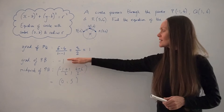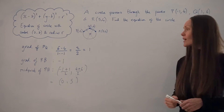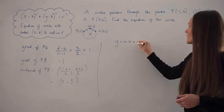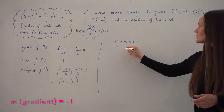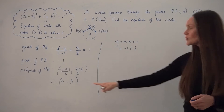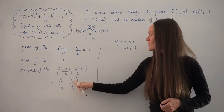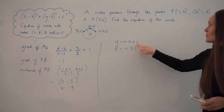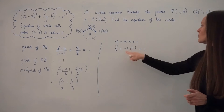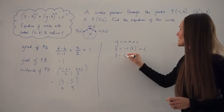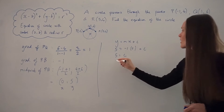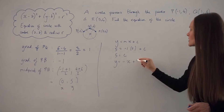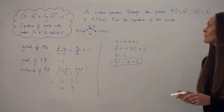Now we have the gradient (-1) and a point (0, 5) on the perpendicular bisector. Using y = mx + c, substituting m = -1, x = 0, y = 5: 5 = (-1)(0) + c, so c = 5. The equation of the perpendicular bisector of PQ is y = -x + 5.